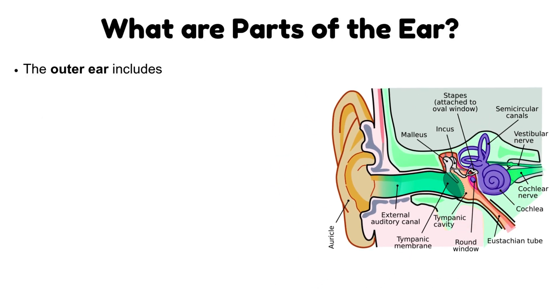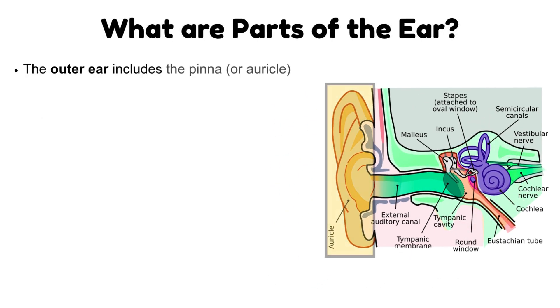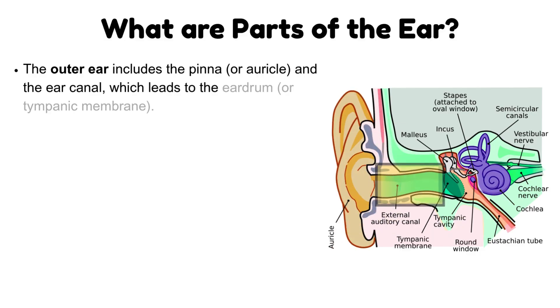The outer ear includes the pinna, or auricle, and the ear canal, which leads to the eardrum, or tympanic membrane.